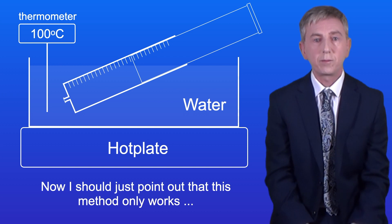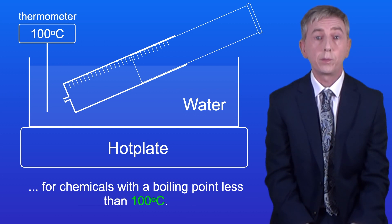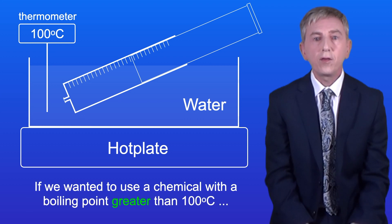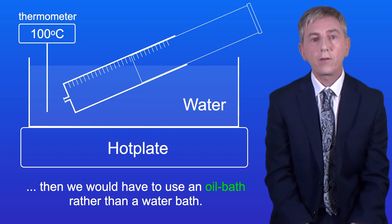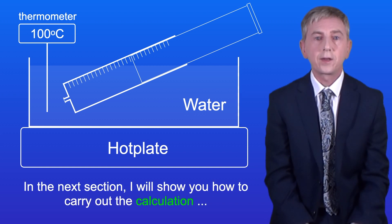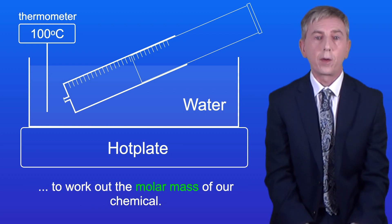Now I should just point out that this method only works for chemicals with a boiling point less than 100 degrees celsius. That's because 100 degrees celsius is the temperature of boiling water. If we wanted to use a chemical with a boiling point greater than 100 degrees celsius then we'd have to use an oil bath rather than a water bath. In the next section I'll show you how to carry out the calculation to work out the molar mass of our chemical.